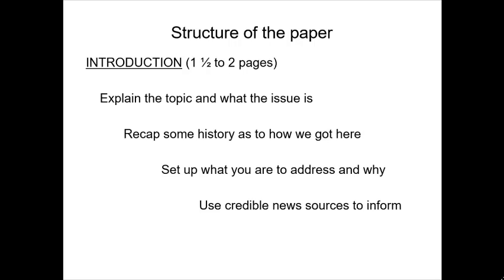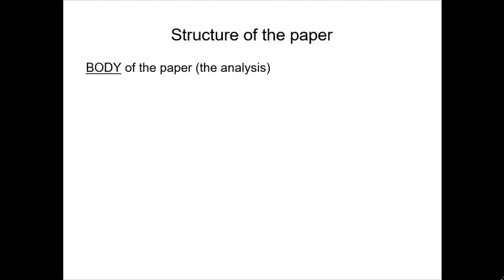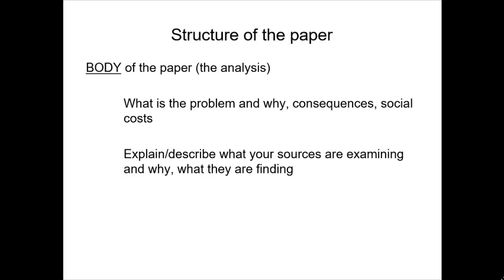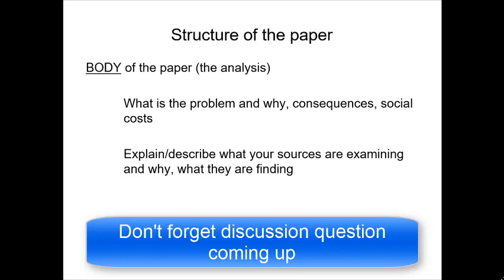You can use news sources to explain why you're going to write about this topic. The body of your paper is by far the most important part — typically the rest of your paper, except for perhaps the last page or so, is going to be the analysis of this topic. What is the problem and why? What are the consequences? What are the social costs? In the body, you're using credible academic sources to explain and describe what scholars are examining, why they are examining it, what they are measuring, and what they are finding as it relates to the problem you have chosen to write about.